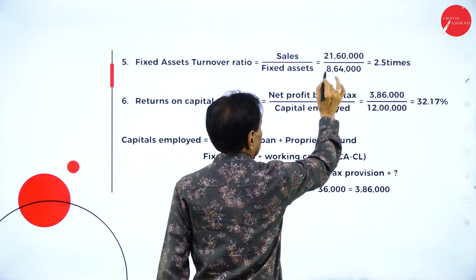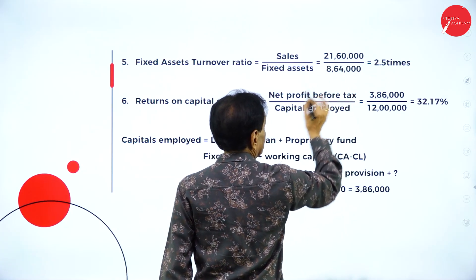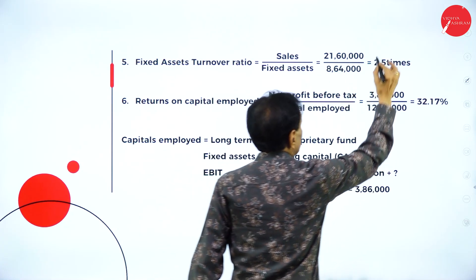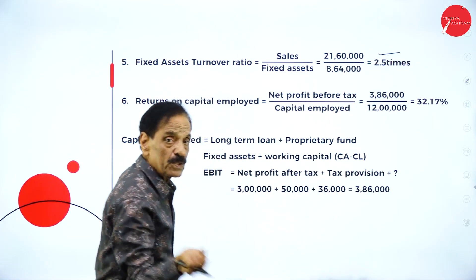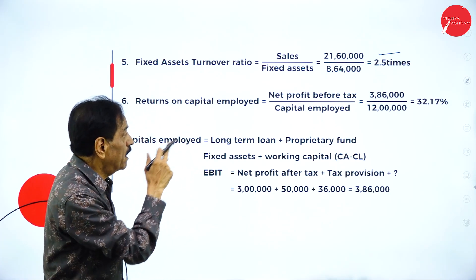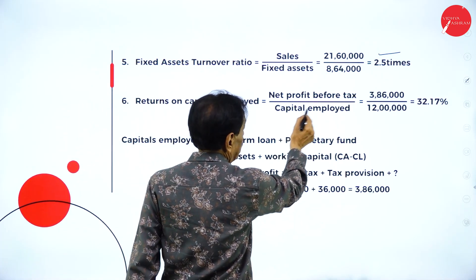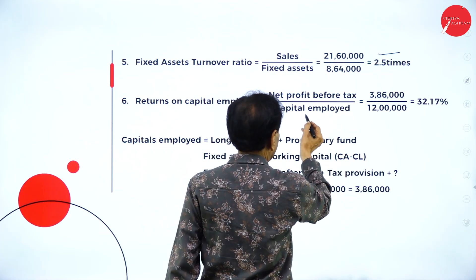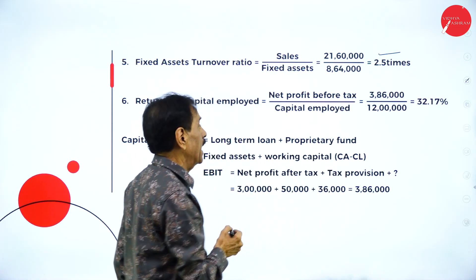Fixed asset turnover ratio is sales divided by fixed assets. Sales are 21 lakh 68,000 divided by fixed assets of 8 lakh 60,000 — this works out to approximately 2.5 times. So based on fixed assets, the business turns over 2.5 times.